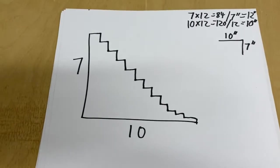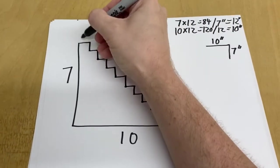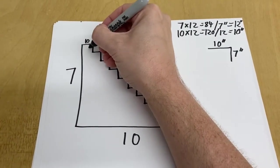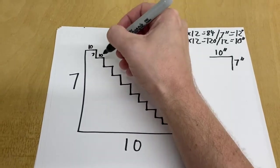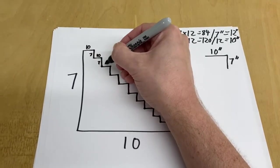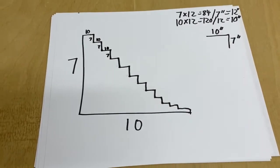So that means that when we build this, this is going to be 10. That's going to be 7. That's going to be 10. This is going to be 7. 10, 7. And you get the point.